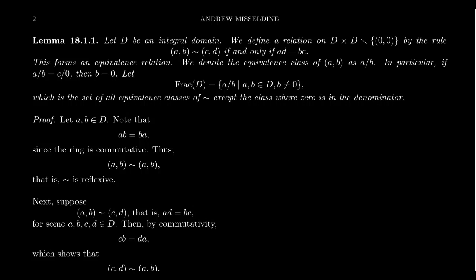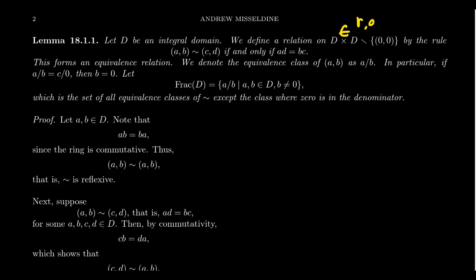To establish this, we construct an equivalence relation on D cross D, but removing the pair (0,0). We define: the pair (A,B) is equivalent to the pair (C,D) if the cross product AD equals BC. We claim this is an equivalence relation, which we will now prove. We denote the equivalence class of the ordered pair (A,B) as the fraction A/B.